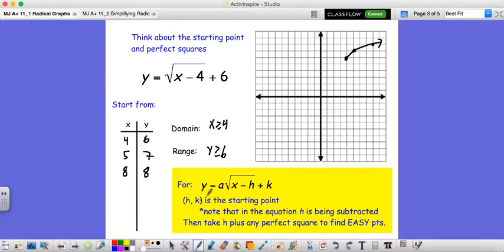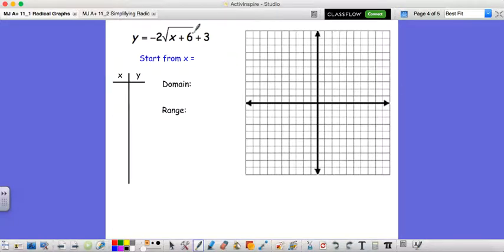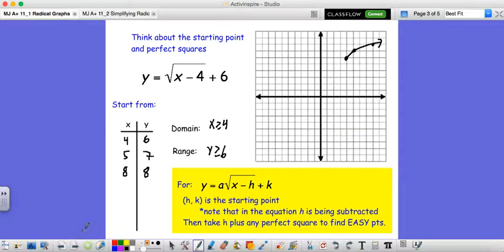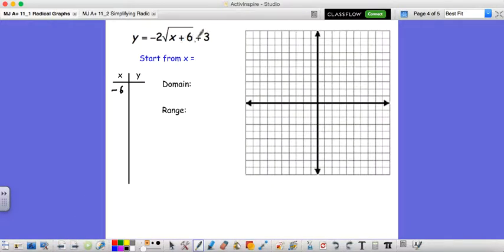So we get just a couple more quickly. Now that we have this little trick where (h, k) is our starting point, graphing this isn't too bad. Remember, x plus 6 would translate to a negative 6 as our starting point because the general form is minus h. Here we're adding something, so we're just going to take the opposite. So (-6, 3) is our starting point.